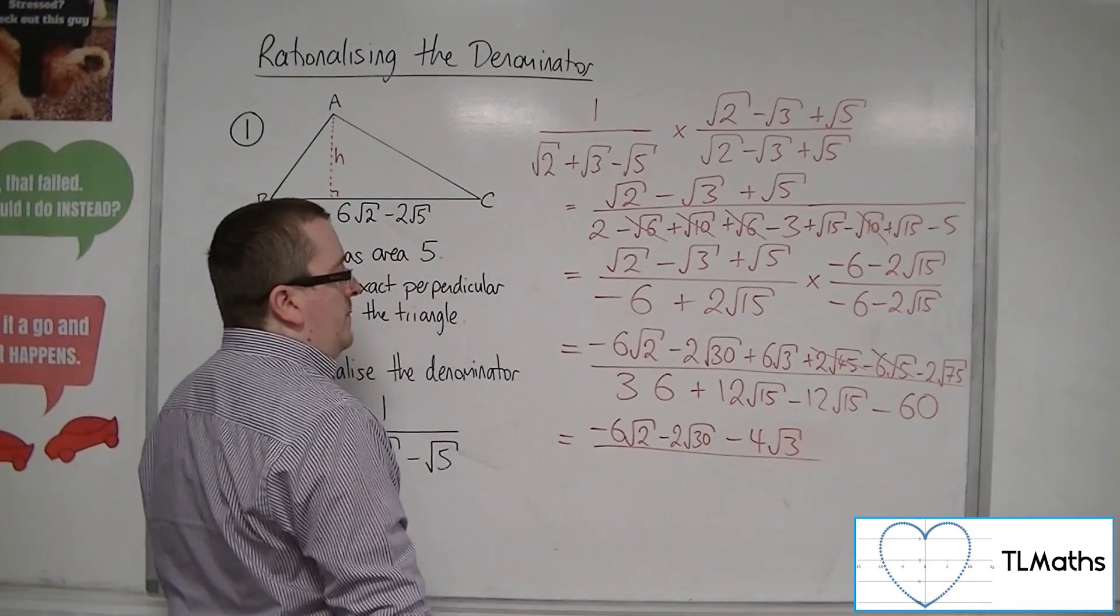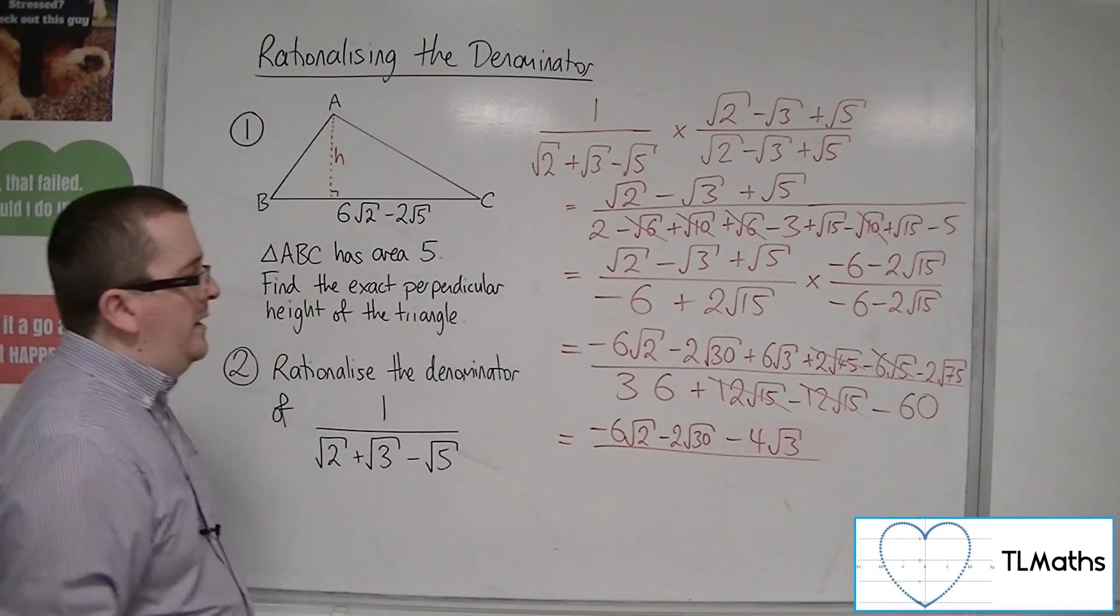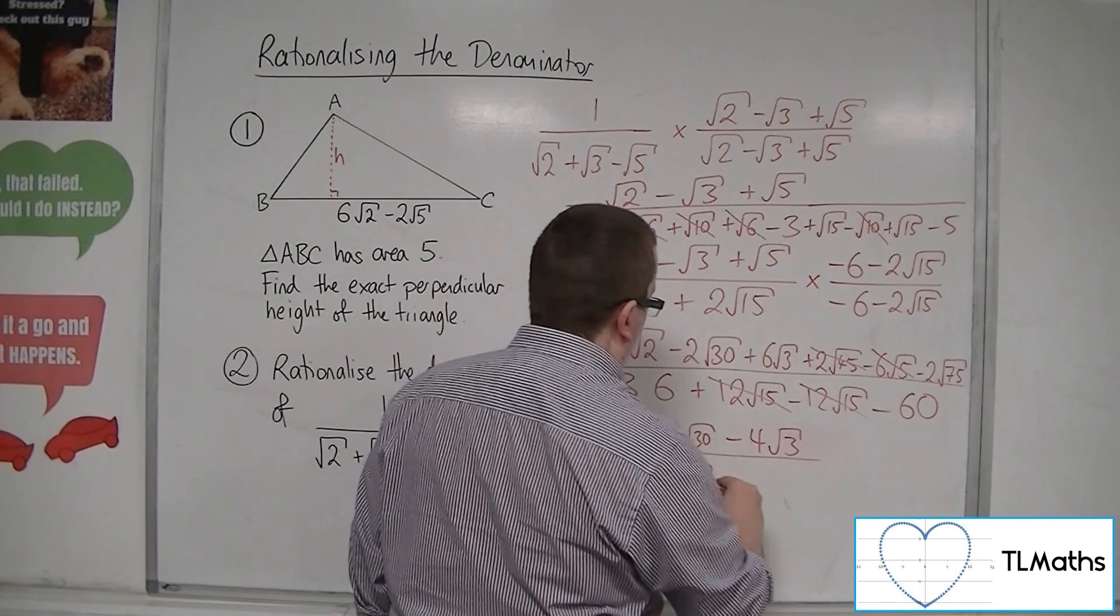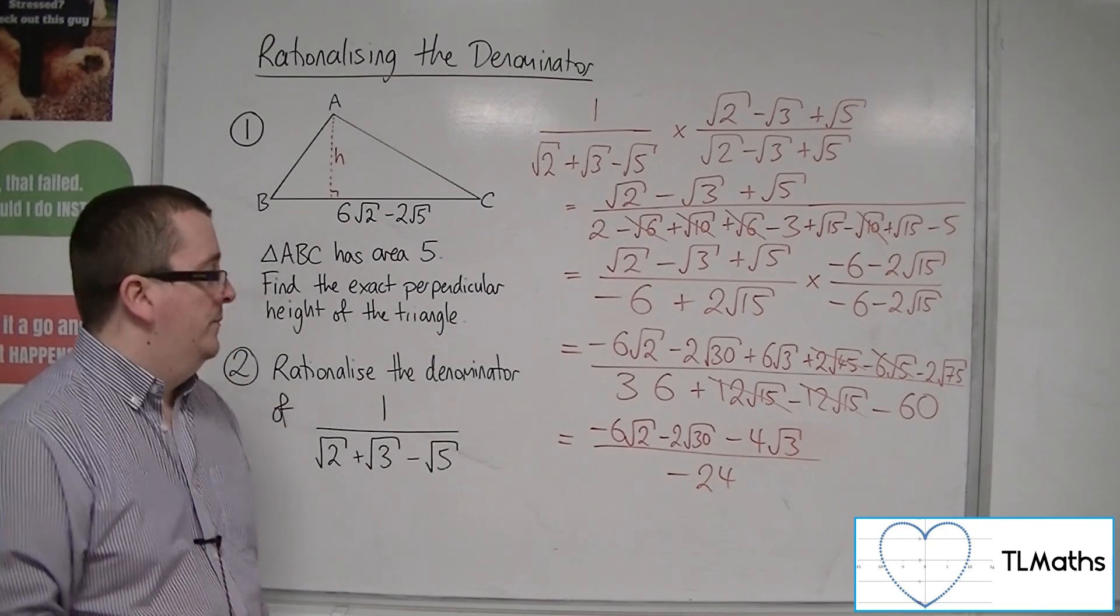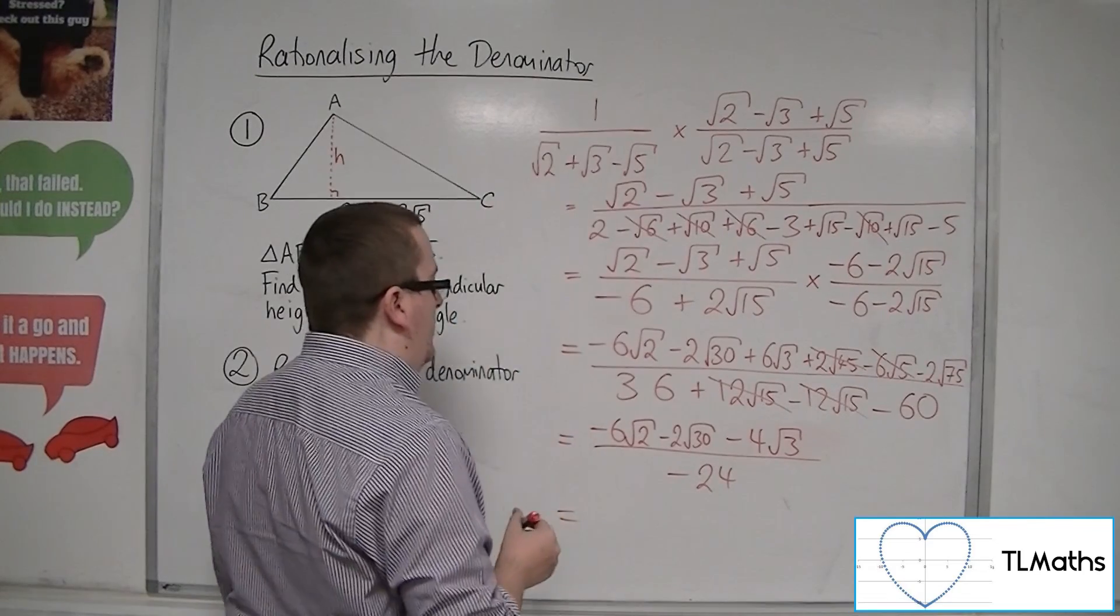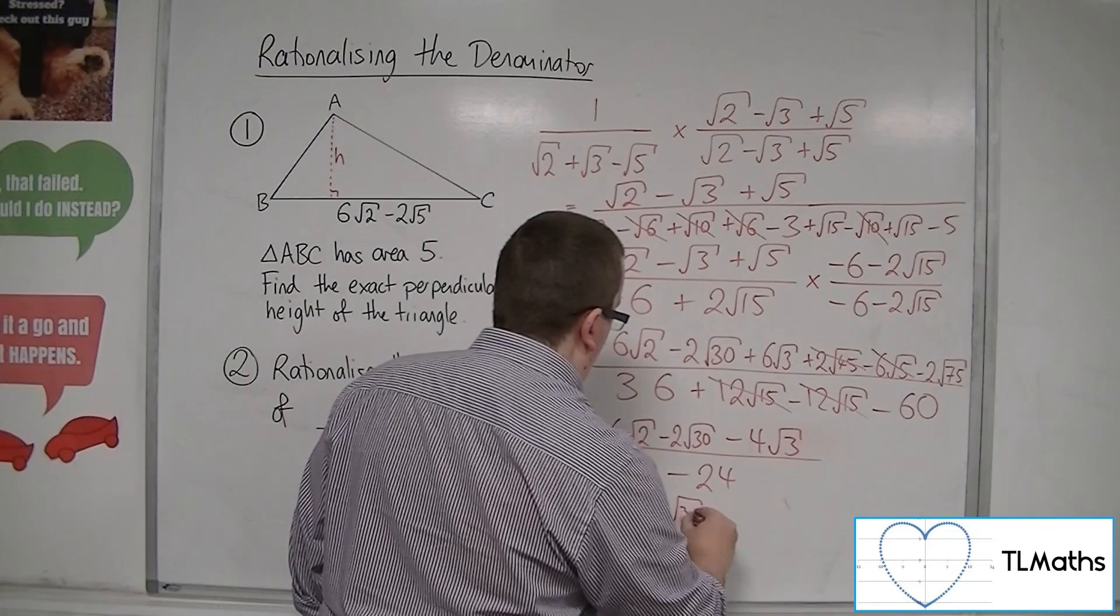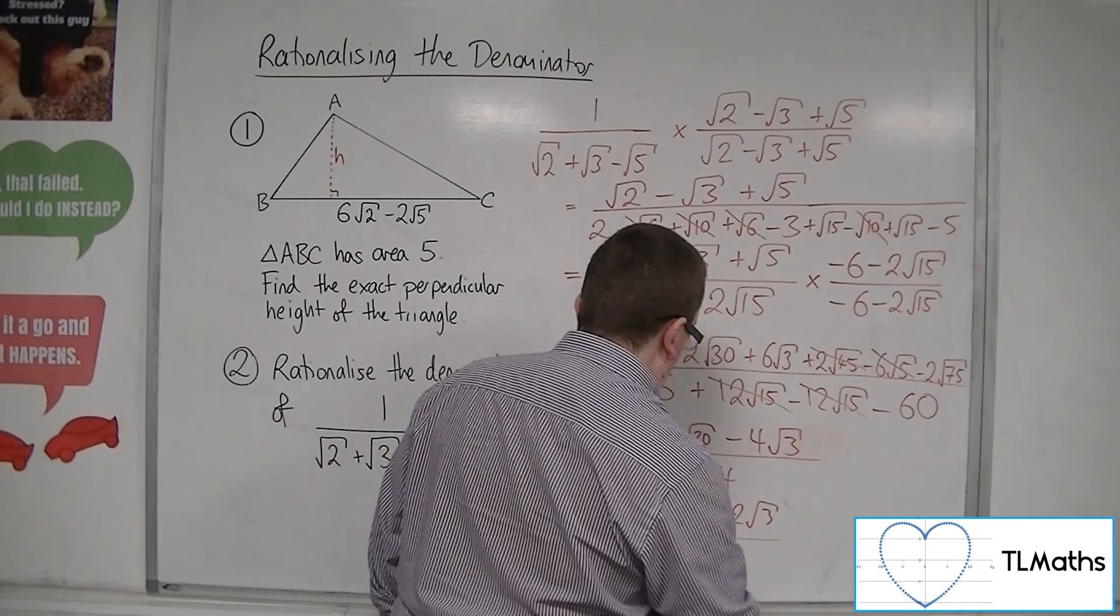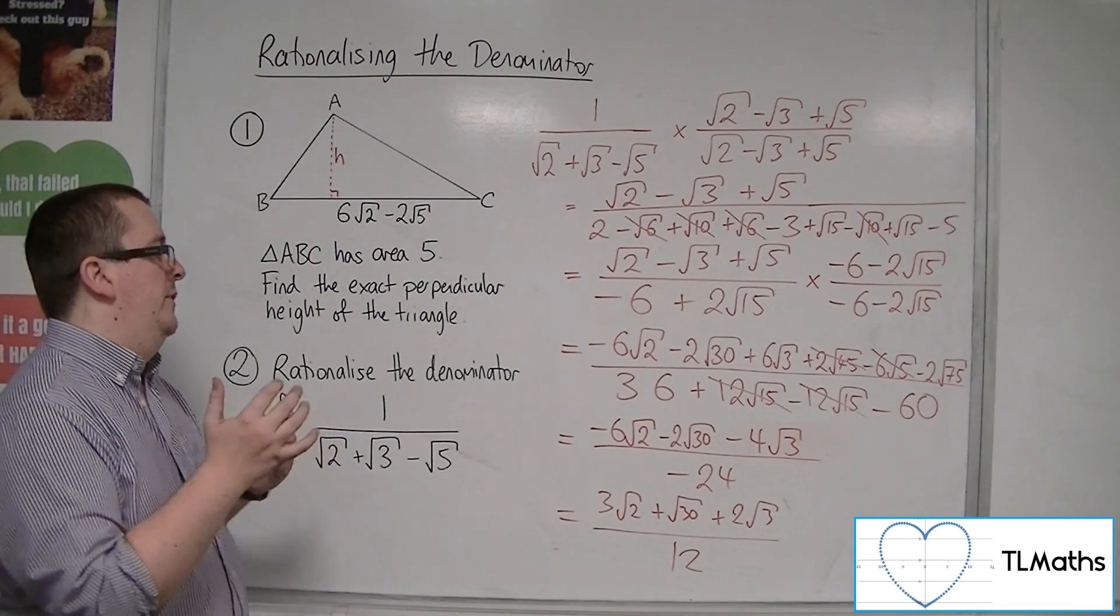And in the denominator, these 12 root 15s cancel. 36, take away 60, gets us down to minus 24. So, you could then divide through by 2, top and bottom, and by minus 2, because they're all negative. So, divide through by minus 2. So, we're going to get 3 root 2 plus root 30 plus 2 root 3 all over 12. And that is the final answer for this problem.